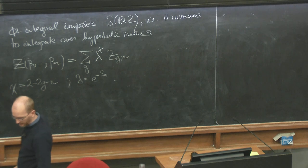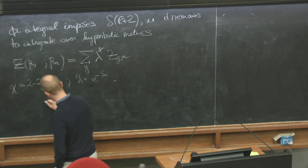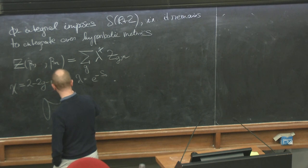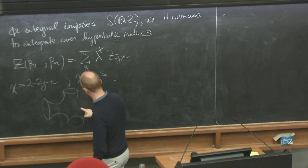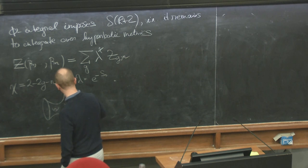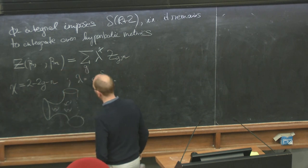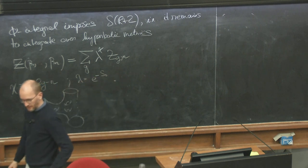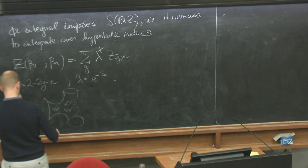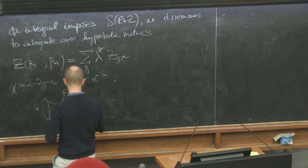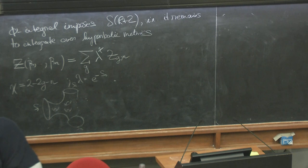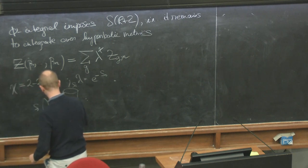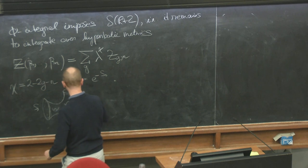C_{G,N} is the integral over all hyperbolic metrics on surfaces of genus G with n boundaries. People draw diagrams where you have various numbers of boundaries and an arbitrary number of handles. We have our S_1, S_2, et cetera, S_n — and for each boundary, in principle, you would have this wiggly cutoff boundary shape to take into account.